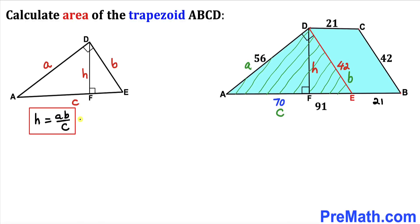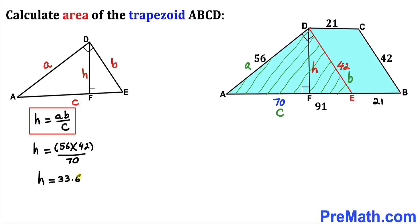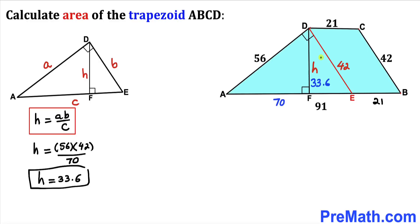In our case, a equals 56, b equals 42, and c equals 70. So our height H equals 56 times 42 divided by 70. Simplifying, our height H turns out to be 33.6 units. Therefore the height for this trapezoid is 33.6 units.